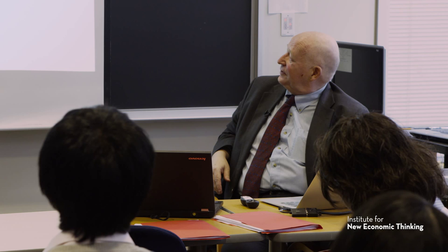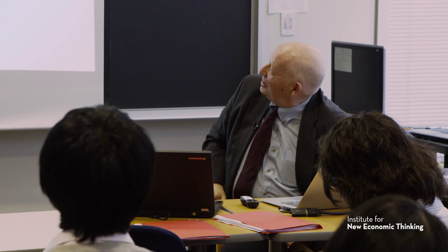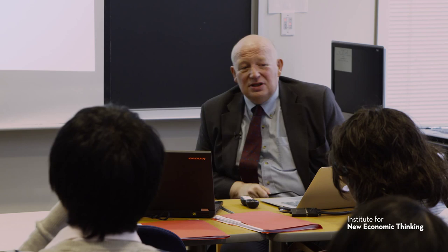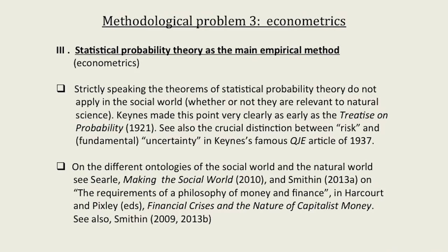What's the third methodological problem in mainstream macroeconomics? It's the use of statistical probability theory as the main empirical method, under the name of econometrics — which is also known as economy tricks. The theorems of statistical probability theory simply do not apply in the social world. Keynes had made this point as long ago as the Treatise on Probability in 1921, and made the point very clearly. There's also the famous article by Keynes in the Quarterly Journal of Economics, 1937.